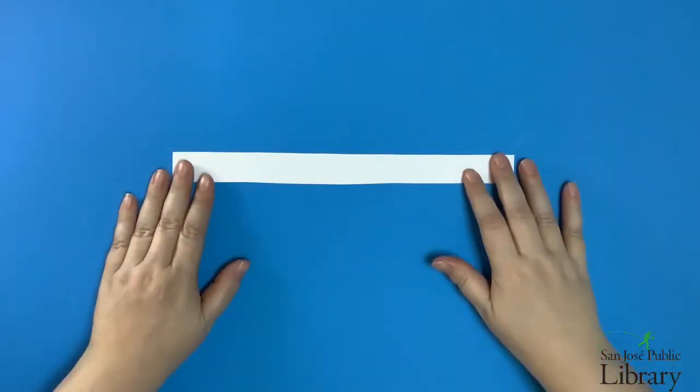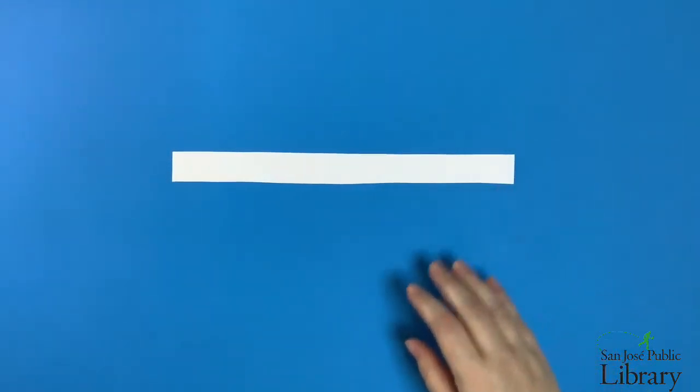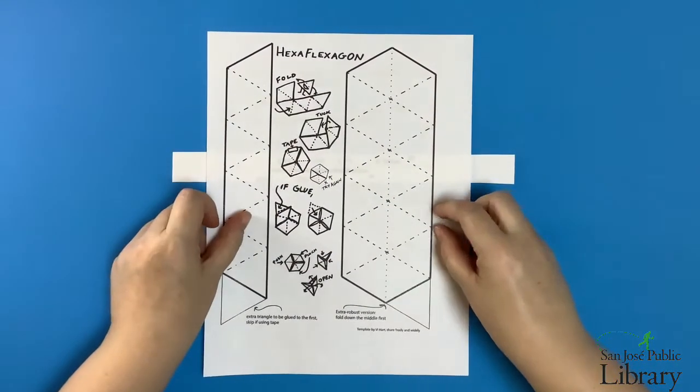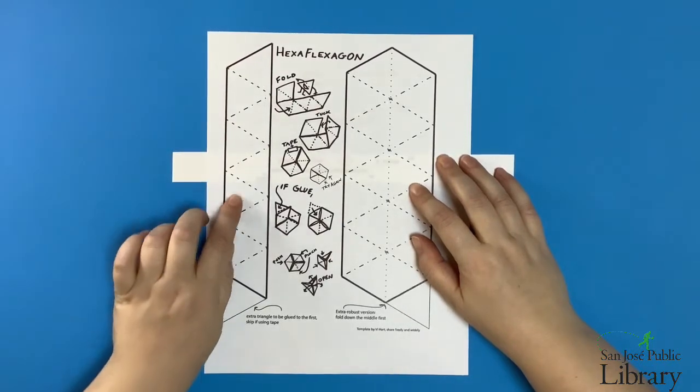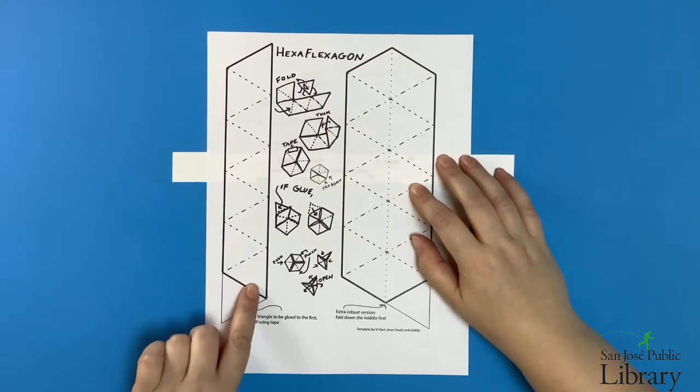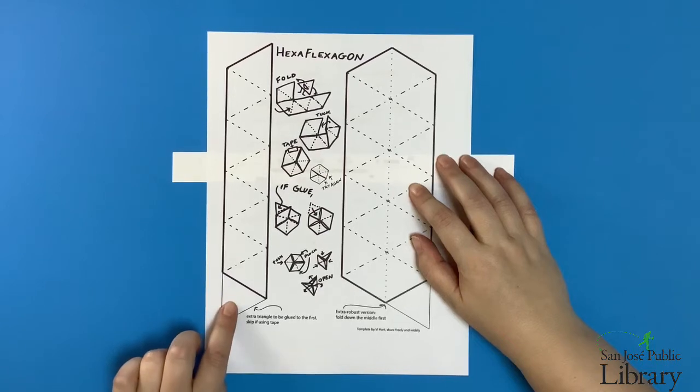Now let's get started with our hexaflexagon. We're going to take our other strip of paper and just as it shows on this template here, we're going to fold the strip of paper into nine or ten equilateral triangles.